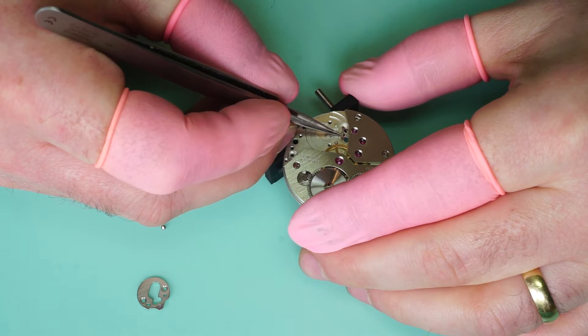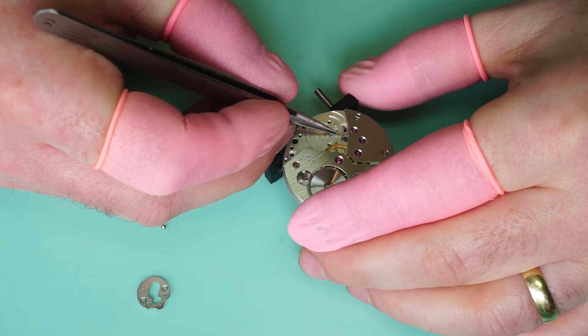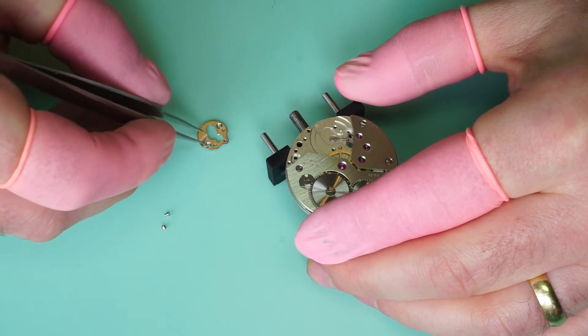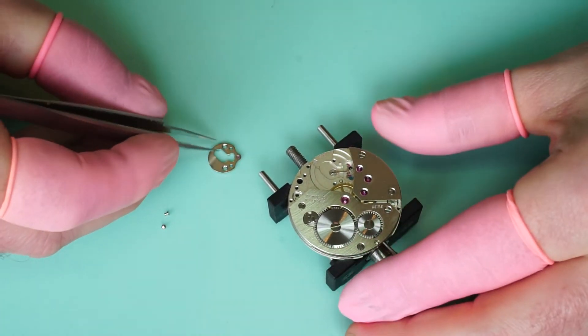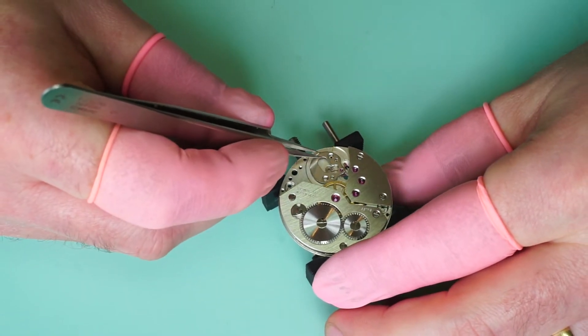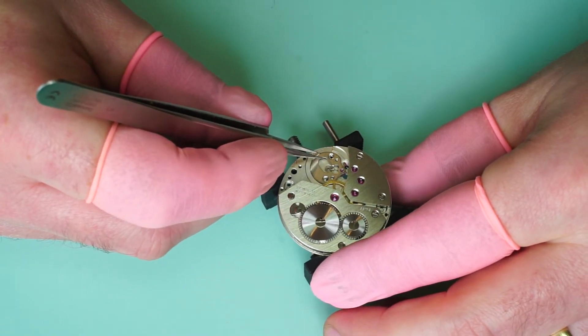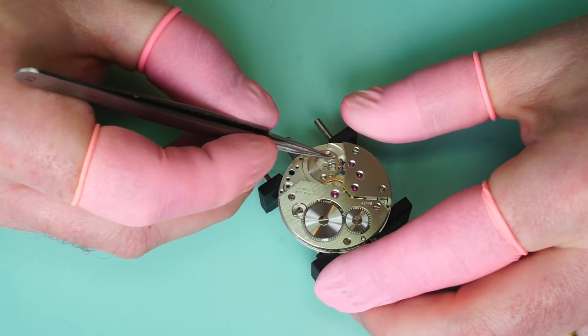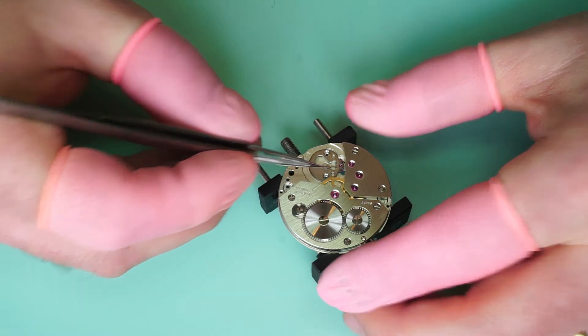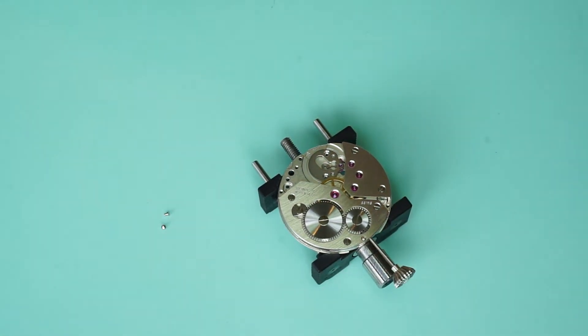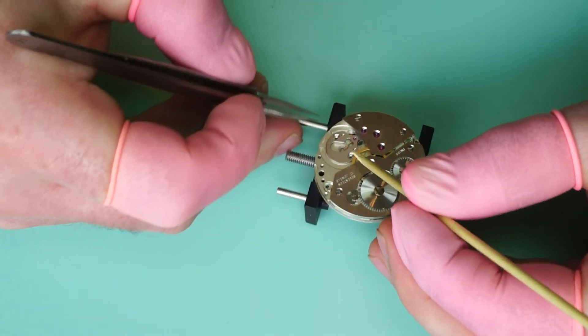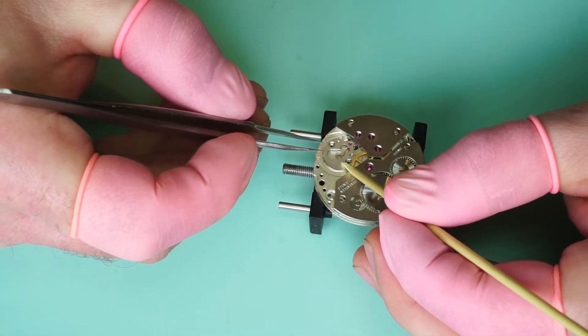So now we're going to fit the pallets, and we're going to take the pallet cock. This is an area where you really want to take your time, you don't want to damage the pallet staff pallets. You can get the cock in its general position like so, and then you take your piece of pegwood and you want to apply a very light pressure on the cock.